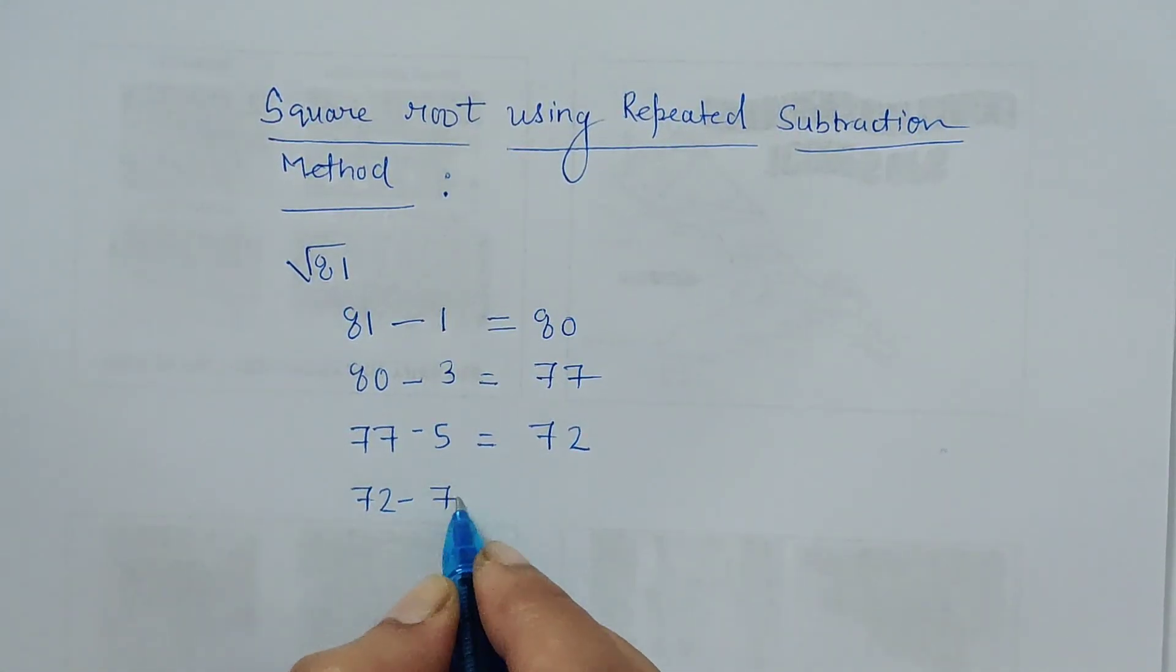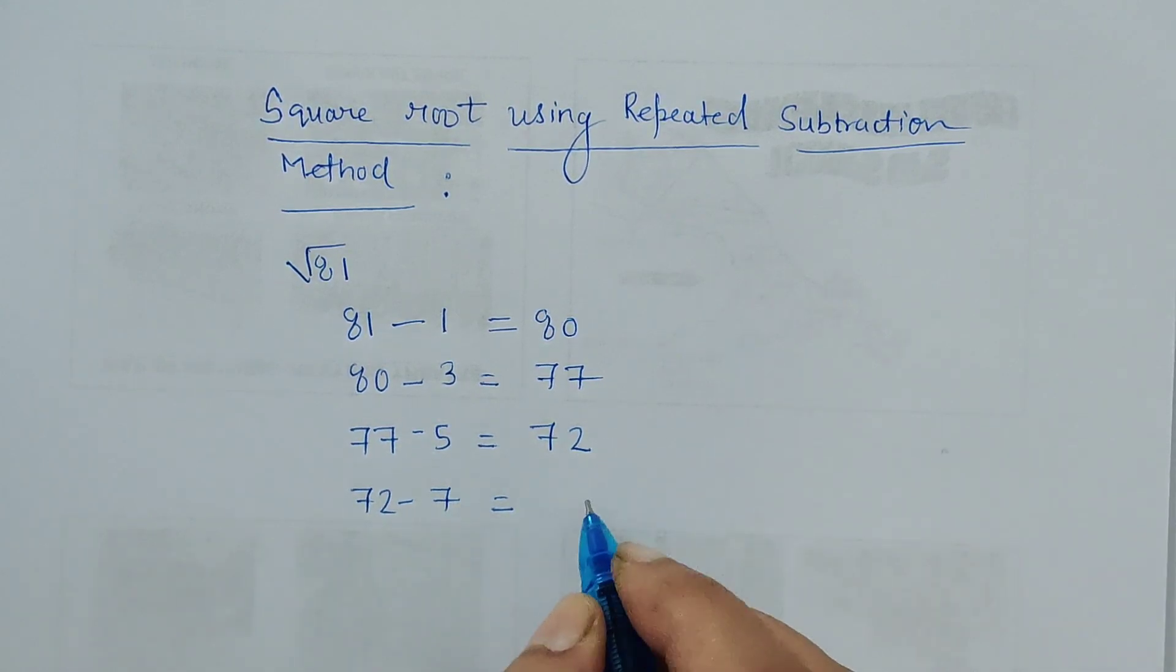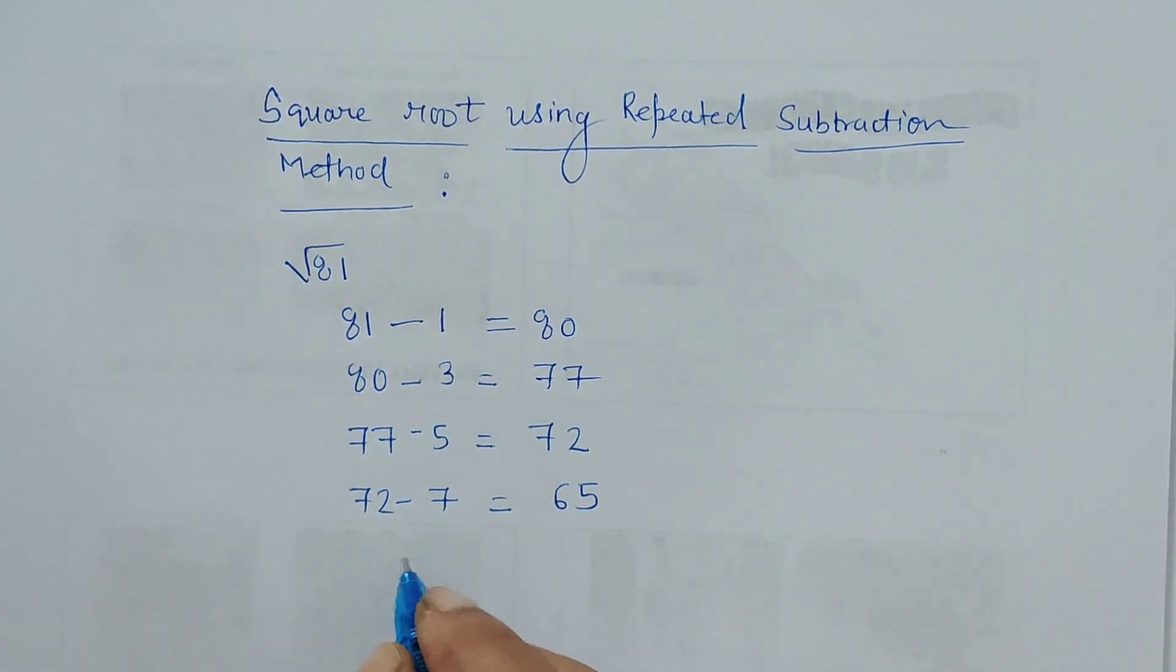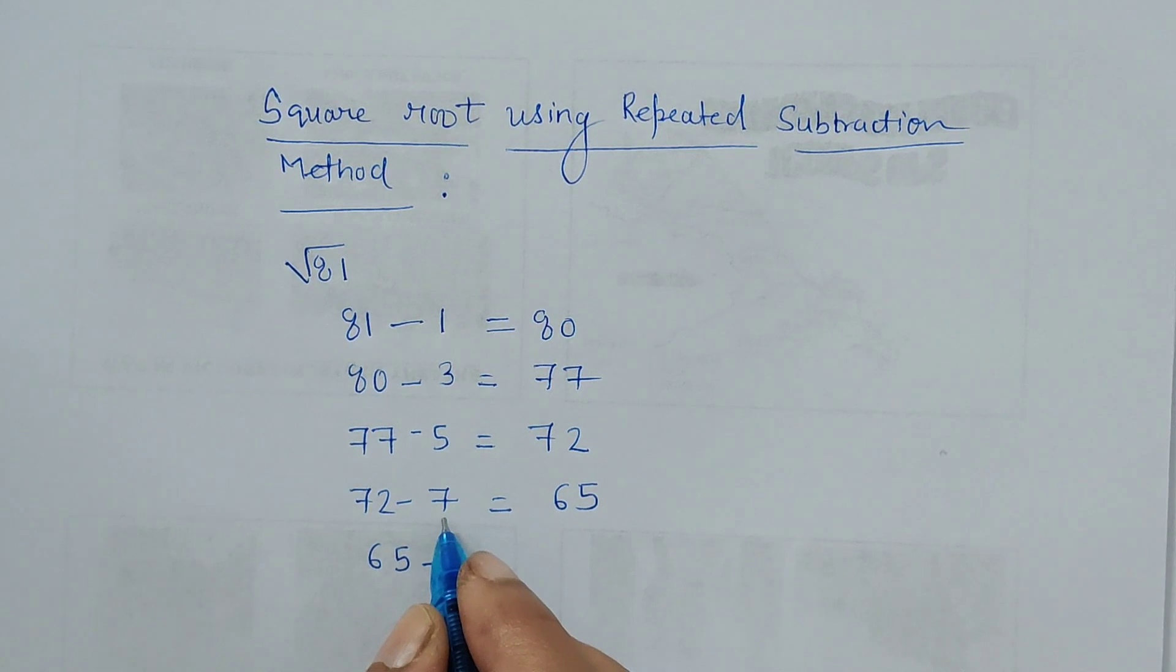What is the next odd number? It is 7. What is the difference between 72 and 7? It is 65. Now write 65 here and subtract it from the next odd number, which is 9, so this will be 56.